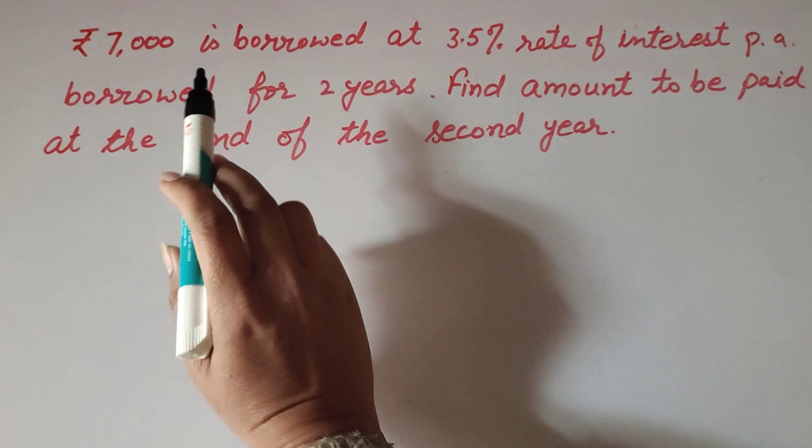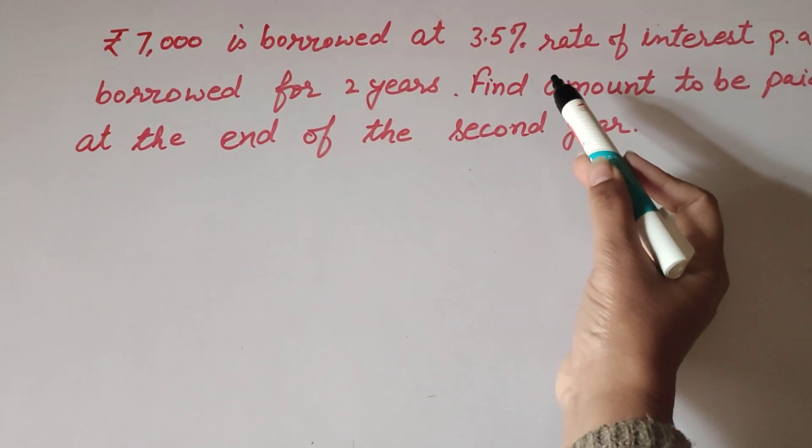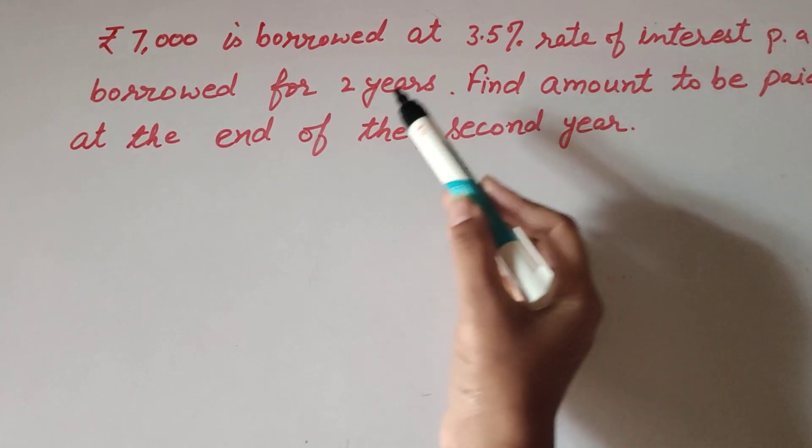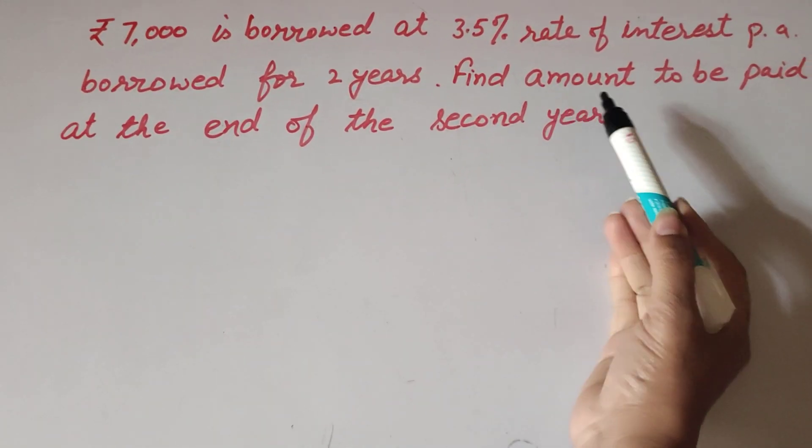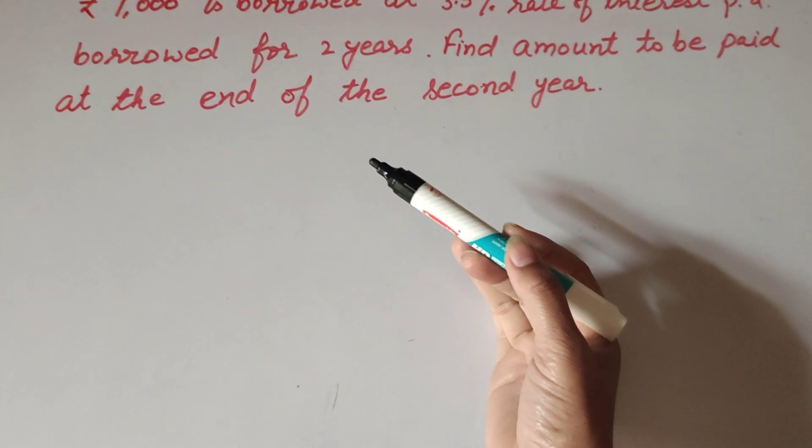In this question, the amount borrowed is ₹7000, rate of interest is 3.5%, and time is two years. So we need to find the amount to be paid after two years. Let's start.